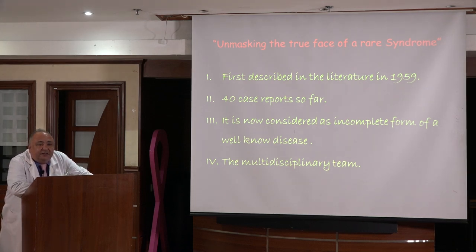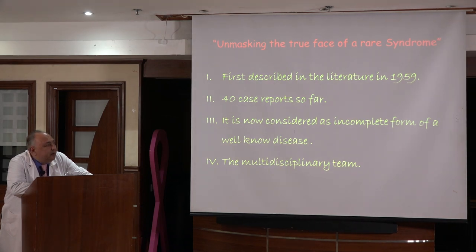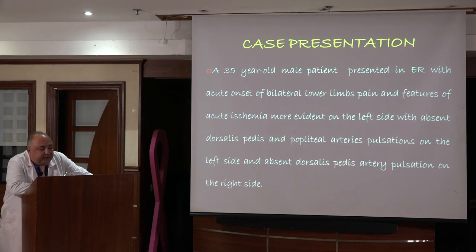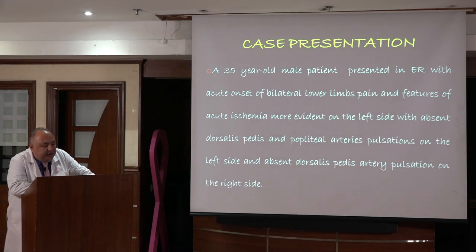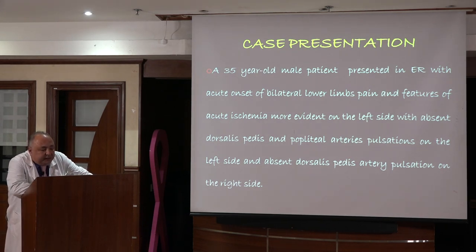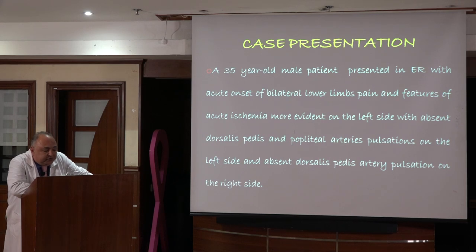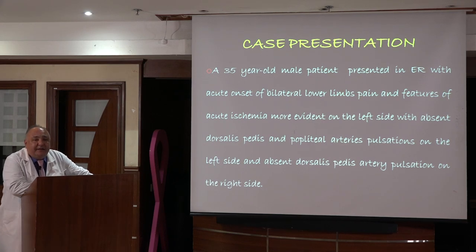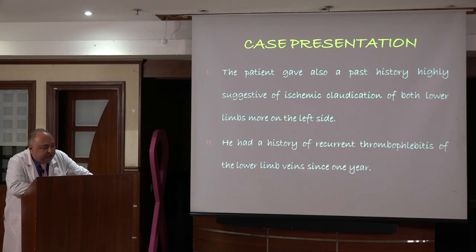In this syndrome we sometimes need a multidisciplinary team to take decisions, like the case I'm going to present today. We have a 35-year-old male patient presented in the ER with acute onset of bilateral lower limb pain and features of acute ischemia, more evident on the left side, with absent peripheral pulsation of the dorsalis pedis on both sides — consistent with acute arterial ischemia.